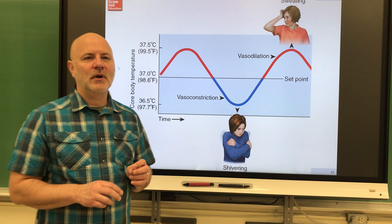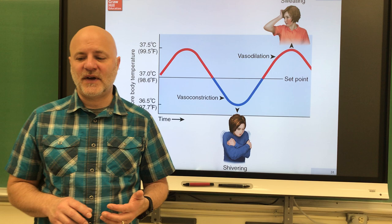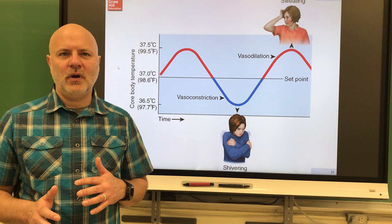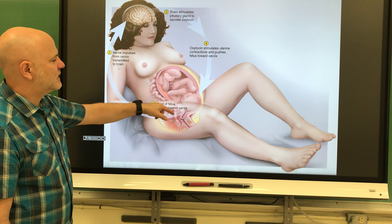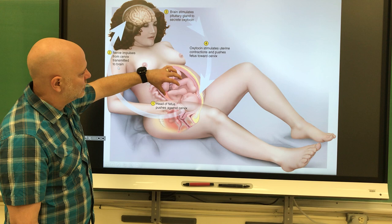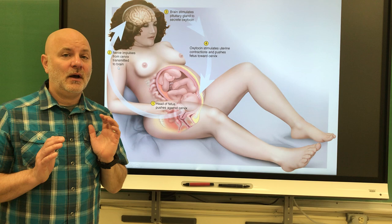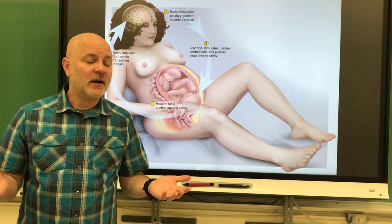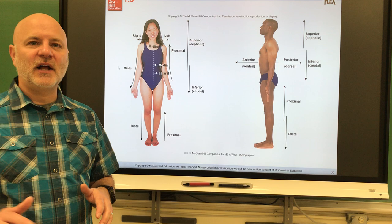The second type is a positive feedback mechanism, where the output of the system intensifies and increases the activity of the system. There are very few cases of this. One major example is the birthing process: when the fetus's head pushes against the cervix, a signal goes to the brain causing release of the hormone oxytocin, which causes uterine contractions. Those contractions push the baby's head further against the cervix, causing more oxytocin, more contractions, and so on until the baby is born.